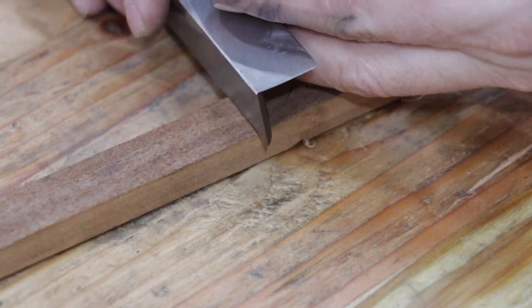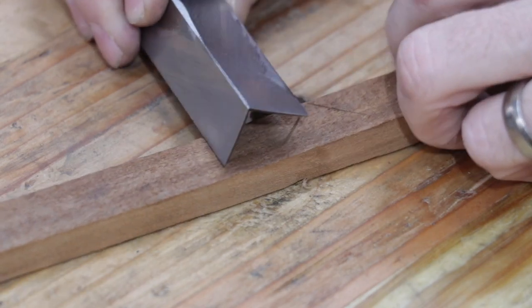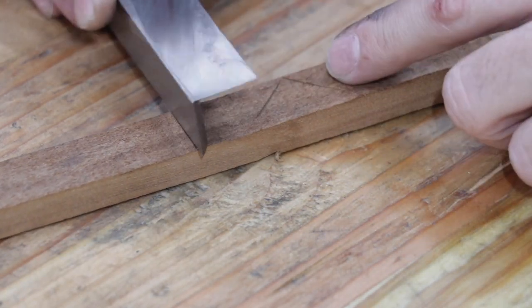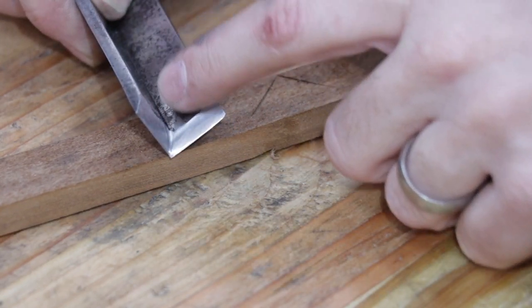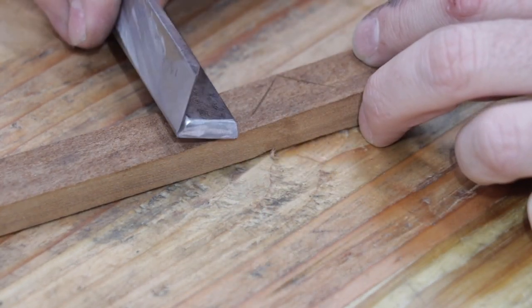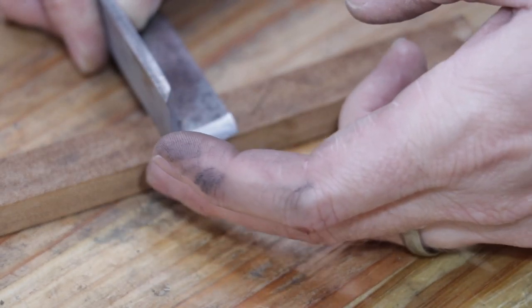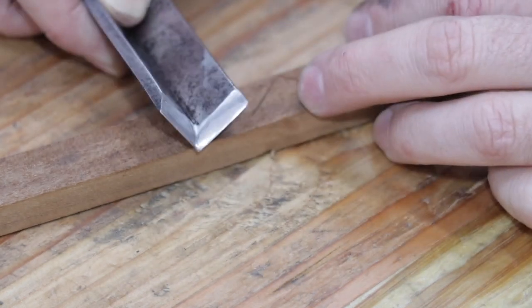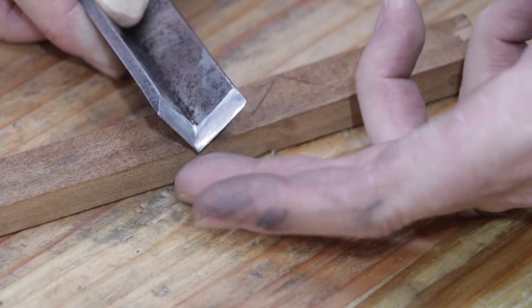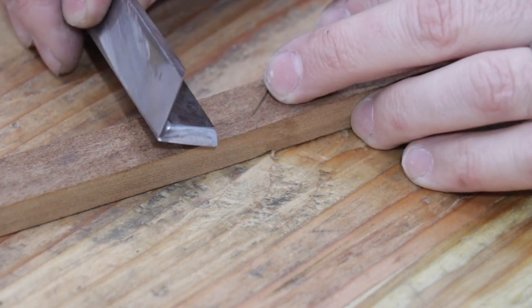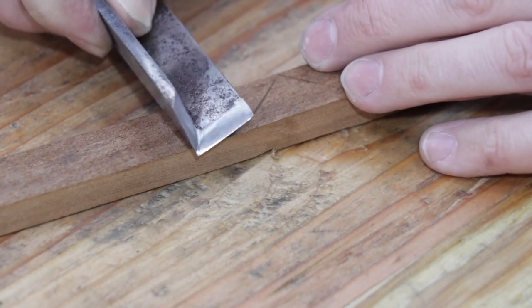I mean, this is a corner chisel, so the main purpose of it is to clean out the corners of a mortise. It won't be used for paring and other things that other chisels are used for. So as long as you have a nice 90 degree corner and it's relatively sharp, it's going to do the task at hand. But I'm really happy with that, so I'm going to go ahead and strop it a little bit and then we can move on to the handle.